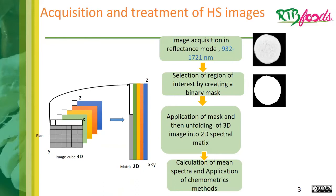For the acquisition and treatment of hyperspectral images, image acquisition is done in reflectance mode from 932 to 1721 nanometers, followed by selection of regions of interest by creating a binary mask, application of the mask, and then unfolding of the 3D image into a spectra matrix.